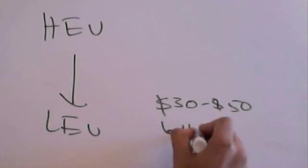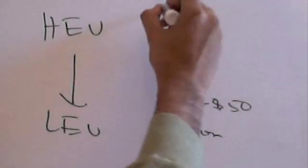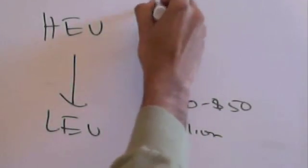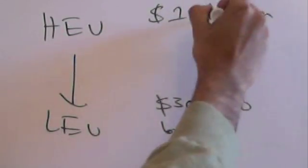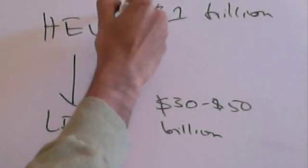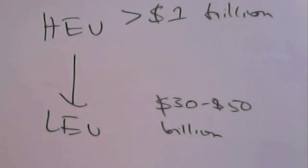The only way to make the world immune to a nuclear terrorist attack is to substitute the use of HEU with LEU, or Low Enriched Uranium. The cost of that is 30 to 50 billion dollars, which would be a bargain compared to the losses of over a trillion dollars with a nuclear terrorist event.